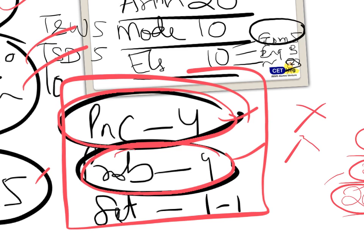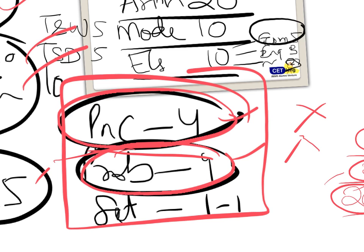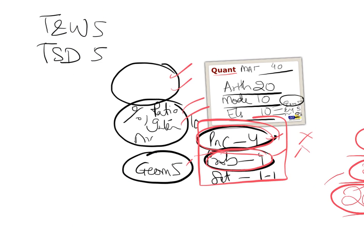If you look at this: P&C probability is a 1 day job, time speed distance and time at work is a 1 day job. Number system is a 1 week job - you can get LCM, HCF, remainder theorem, everything in this topic. So avoidable.